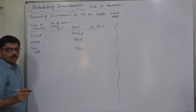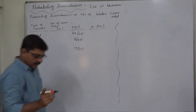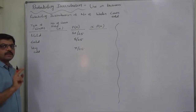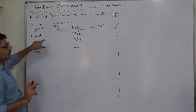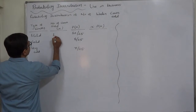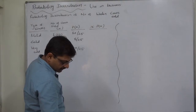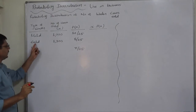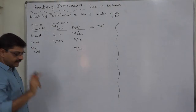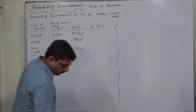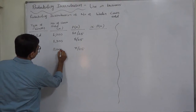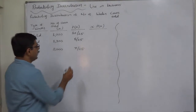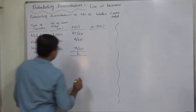The probability of a very cold winter is 7 out of 25. Since the company sells 1000 woolen coats in a mild year, the probability of selling 1000 coats equals the probability of a mild winter, which is 10 by 25. The probability of selling 1300 coats equals the probability of a cold winter, which is 8 by 25. And the probability of selling 2000 coats equals the probability of a very cold winter, which is 7 by 25.